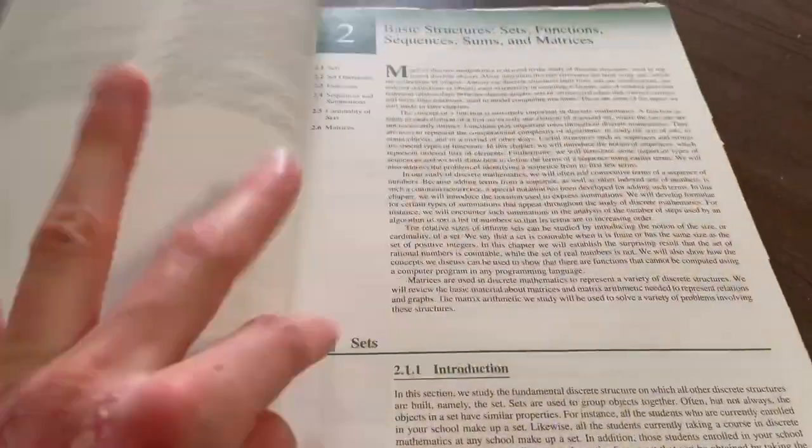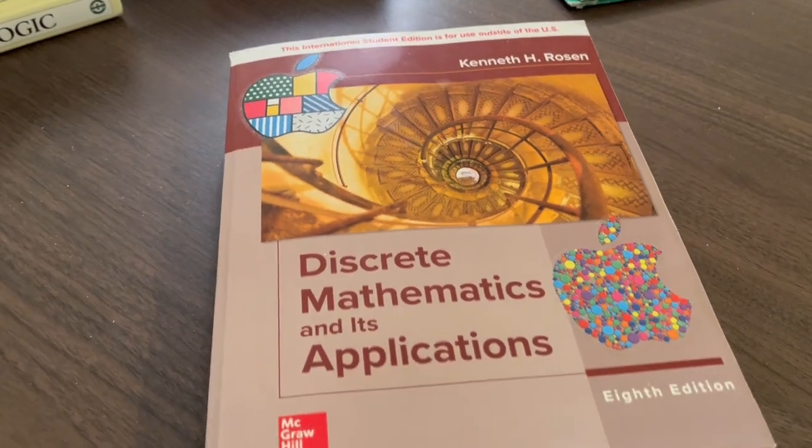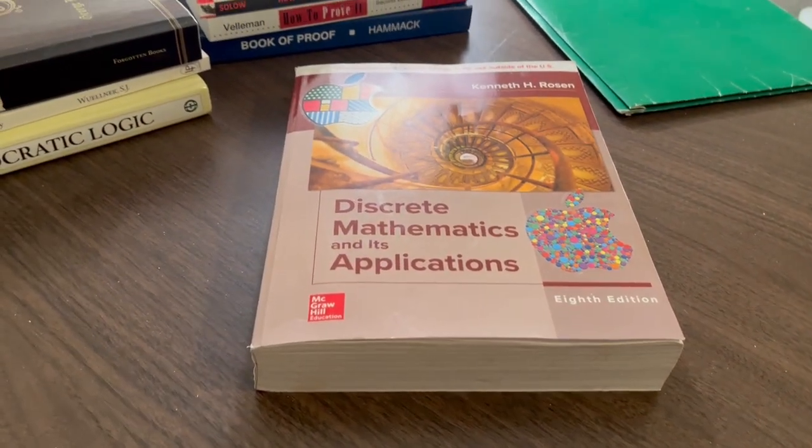All right. So that is chapter one. And then chapter two gets into set theory. But in any case, this is just an introduction to the first chapter of Rosen's textbook, Discrete Mathematics and its Applications.